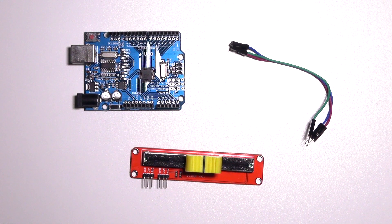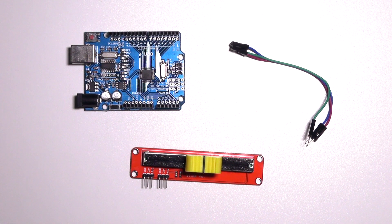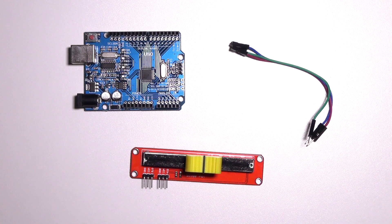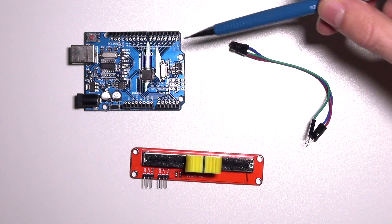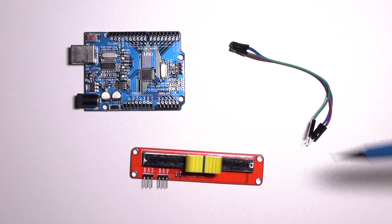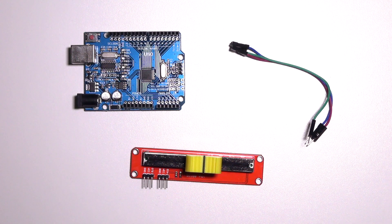In this tutorial I'm going to teach you how to use a sliding potentiometer. For this tutorial you'll need an Arduino, three jumper wires male to female, and a sliding potentiometer.